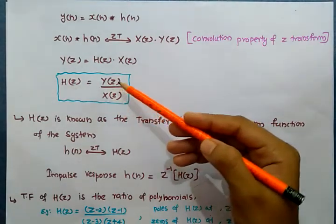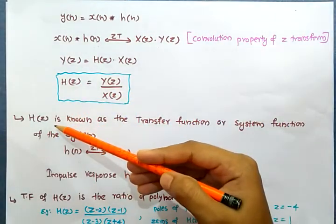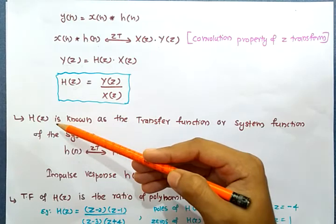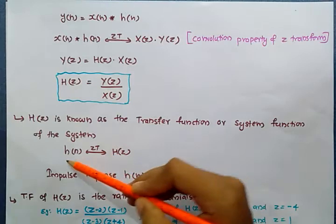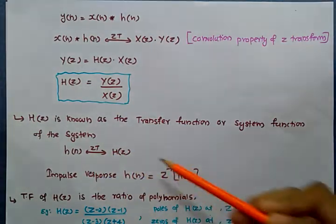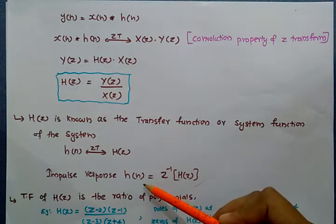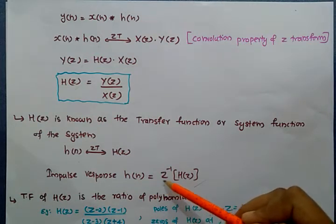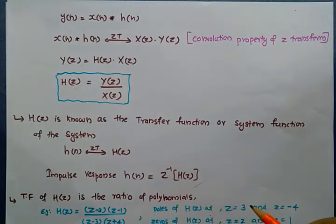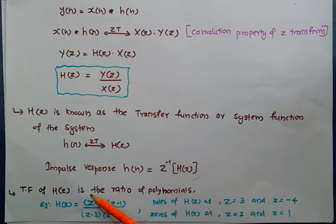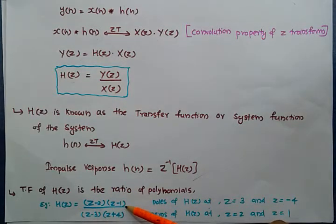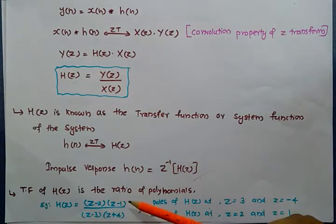Now the system is in the Z-domain, so we have to convert it back to the time domain. The impulse response h(n) in the time domain will be equal to the inverse Z-transform of H(z). One more important term: the transfer function H(z) is a ratio of polynomials. For example, H(z) equals (z minus 2)(z minus 1) divided by (z minus 3)(z plus 4).